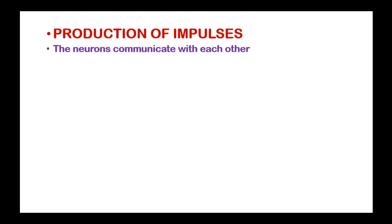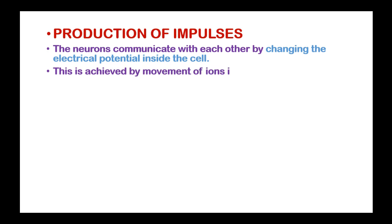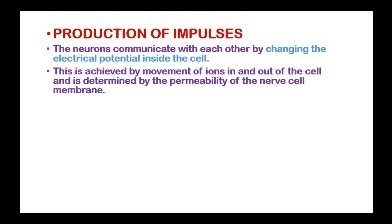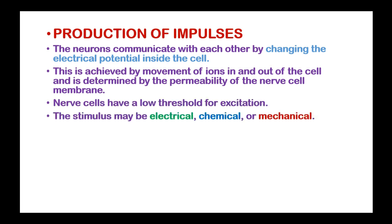The neurons communicate with each other by changing the electrical potential inside the cell. This is achieved by movement of ions in and out of the cell and is determined by the permeability of the nerve cell membrane. These nerve cells have a low threshold for irritation. The stimulus may be electrical, chemical, or mechanical.